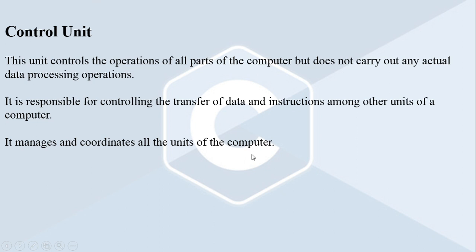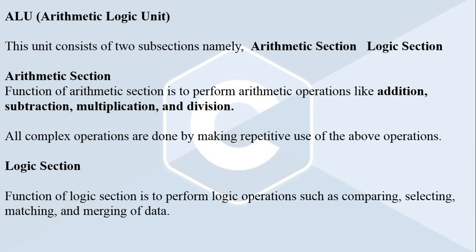Next is the ALU — arithmetic and logic unit — the second part of the CPU. This unit consists of two subsections: the arithmetic section and the logic section. The arithmetic section performs arithmetic operations like addition, subtraction, multiplication, and division. All other complex operations are done by making repetitive use of these basic operations. The logic section performs logic operations such as comparing, selecting, matching, and merging of data. All data processing activities come under the arithmetic and logic unit, and all control and coordinating activities come under the control unit of the CPU.